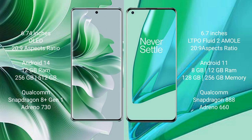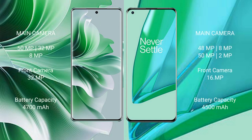Oppo Reno 11 Pro comes with 12GB RAM and 256GB or 512GB internal storage, Qualcomm Snapdragon 8 Gen 1 processor, and GPU Adreno 730. OnePlus 9 Pro comes with 8GB or 12GB RAM and 128GB or 256GB internal storage, Qualcomm Snapdragon 888 processor, and GPU Adreno 660.